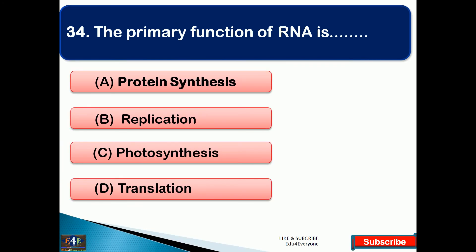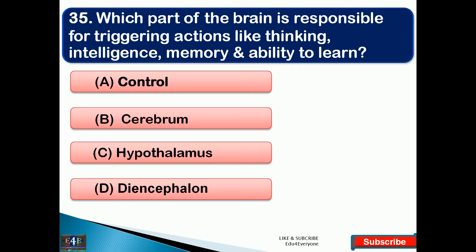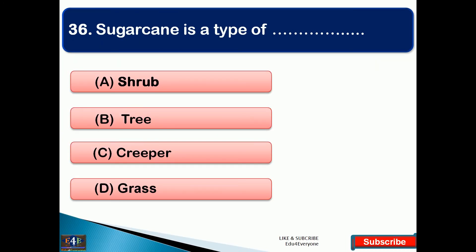The primary function of RNA is — the right answer is option A, that is protein synthesis. Which part of the brain is responsible for triggering actions like thinking, intelligence, memory, and ability to learn? The right answer is option B, that is the cerebrum. Sugar cane is a type of — the right answer is option D, that is grass.